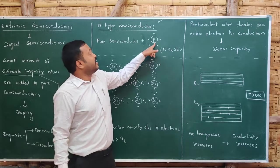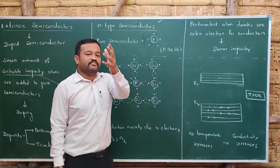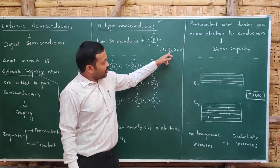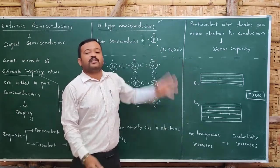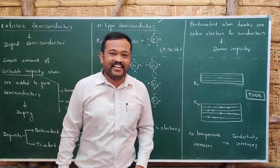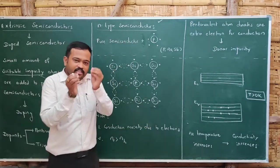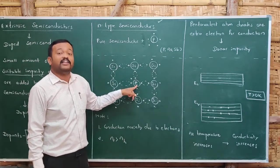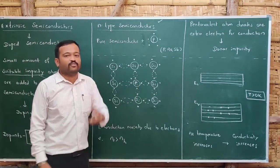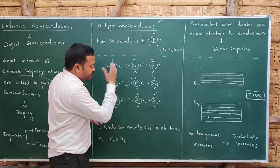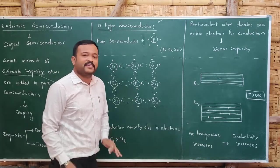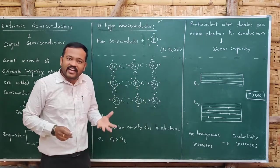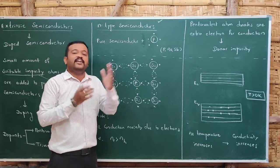We add a pentavalent impurity — for example, phosphorus, which has five electrons. We can also add arsenic or antimony. In the crystal structure, instead of silicon there is now a phosphorus atom. Earlier there were four valence electrons, now there are five. Four electrons form covalent bonds, and one electron is free — that free electron will conduct.